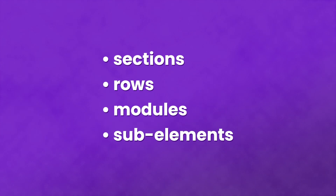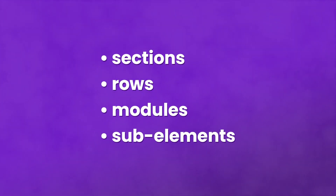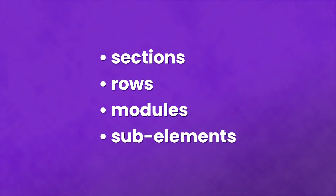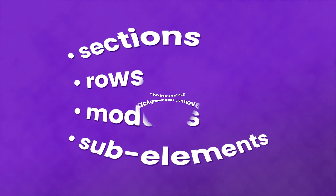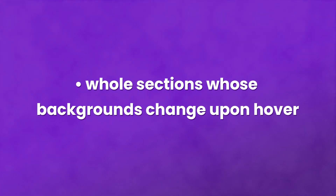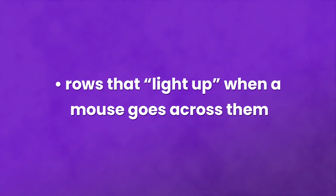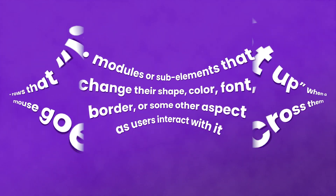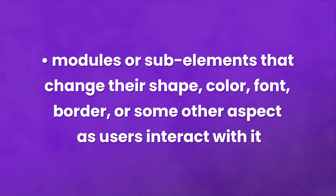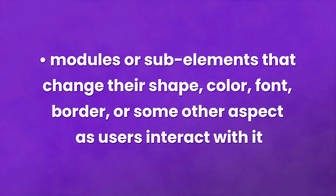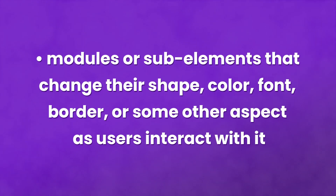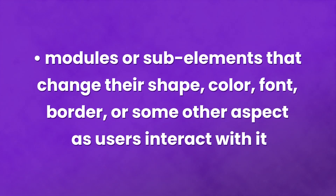Just as you're now able to change a button's design on hover, you will soon be able to do the same thing for sections, rows, modules, and many sub-elements within modules. This will allow you to create whole sections whose backgrounds change upon hover, rows that light up when a mouse goes across them, and modules or sub-elements that change their shape, color, font, border, or some other aspect as users interact with it.